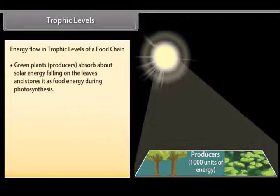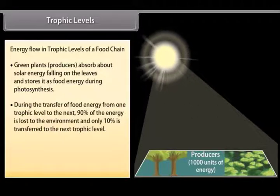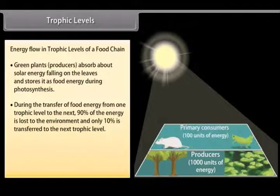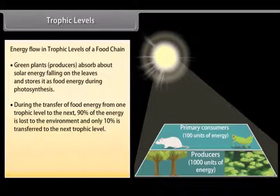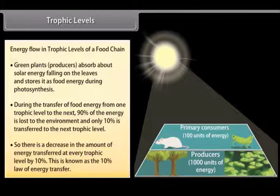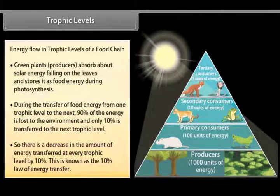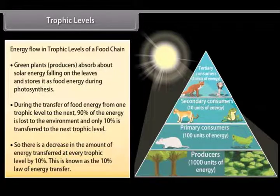Energy flow in trophic levels of a food chain: Green plants (producers) absorb about 1% of solar energy falling on the leaves and store it. During the transfer of food energy from one trophic level to the next, 90% of the energy is lost to the environment and only 10% is transferred to the next trophic level. So there is a decrease in the amount of food energy transferred at every trophic level by 10%. This is known as the 10% law of energy transfer.